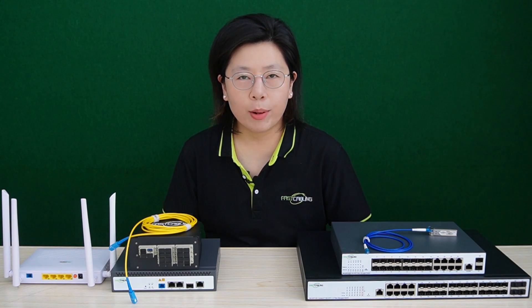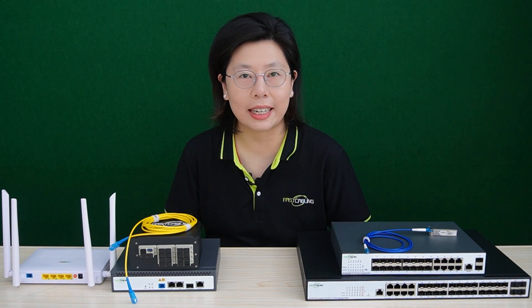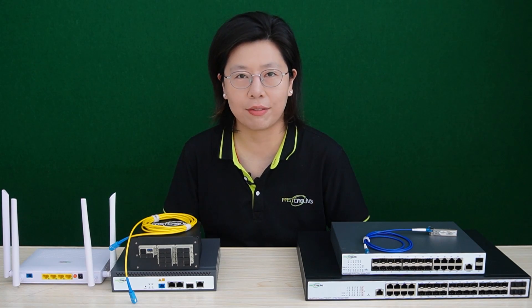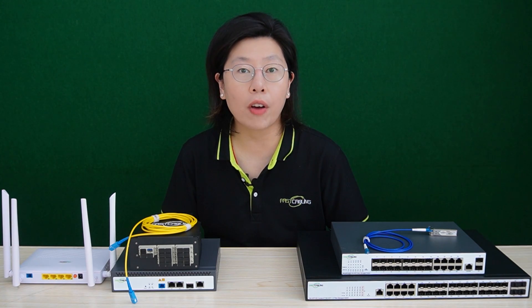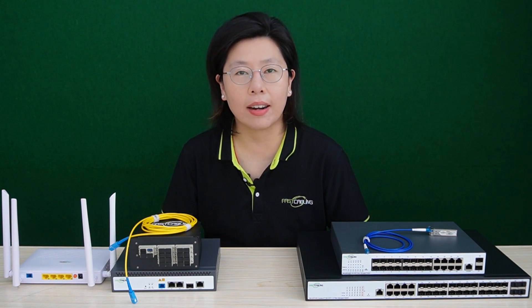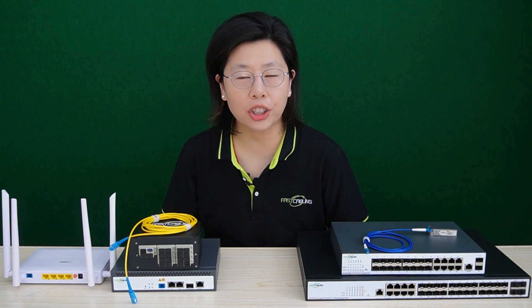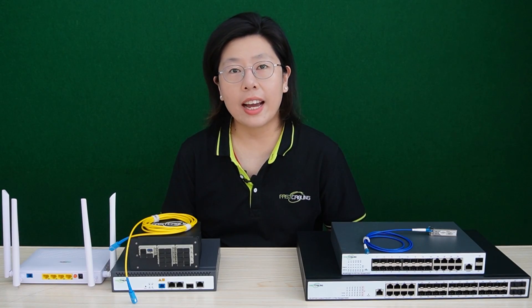The use of fiber-optic cables is a defining feature of PON, offering unparalleled performance in data transmission due to high bandwidth capacity and immunity to electromagnetic interference. An optical splitter divides the optical signal from the OLT into multiple paths, enabling the shared use of a single fiber for multiple users. This innovative use of optical splitters enhances the scalability and efficiency of PON, allowing it to cater to a large number of subscribers without compromising on performance.